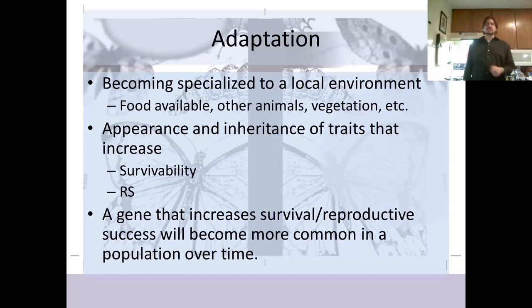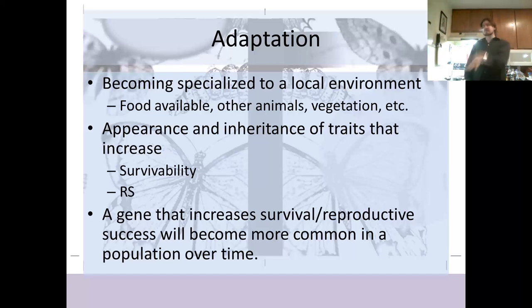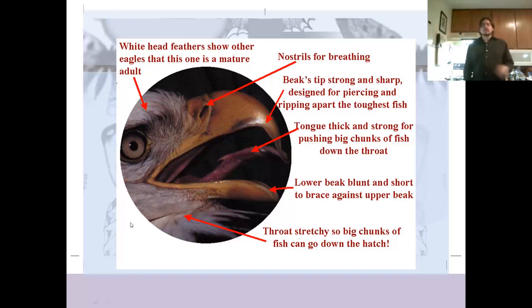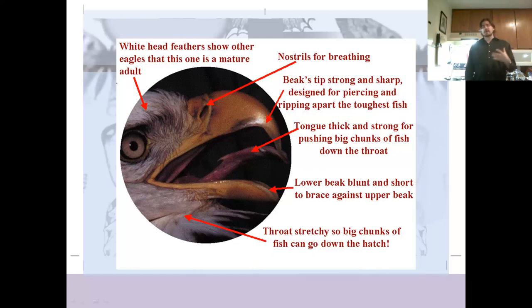A gene that increases survival or reproductive success will become more common in a population over time. Here's a bald eagle with a variety of adaptations specialized for its life. It has a big, stretchy throat so it can eat large chunks of fish — that's an adaptation to eating fish. The beak has a strong, sharp tip for piercing and ripping apart tough fish, and a big strong tongue for pushing large chunks of fish into the stretchy throat. This bird is very well adapted to life as a bird of prey that feeds primarily on fish.